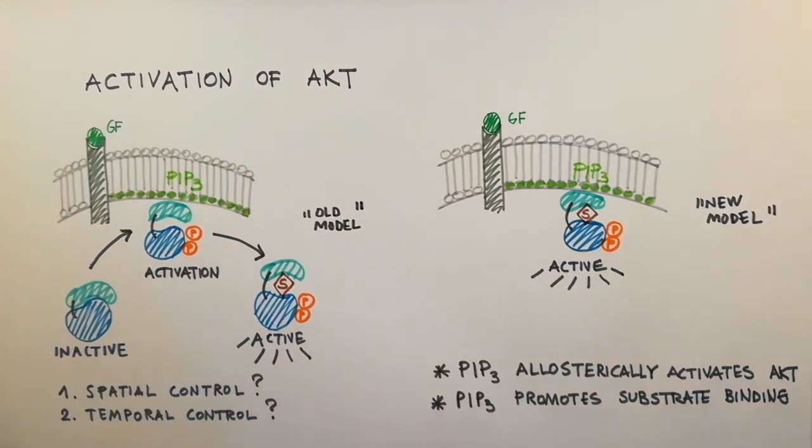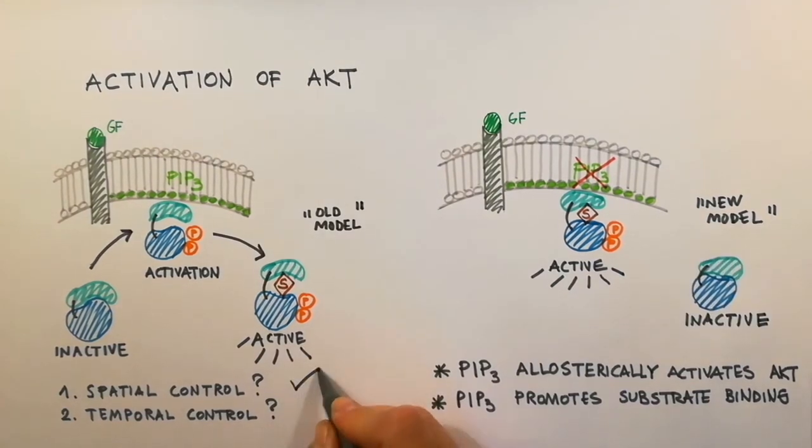As soon as the PIP3 signal is gone, AKT is rapidly inactivated. This mechanism provides both spatial and temporal control over AKT signaling.